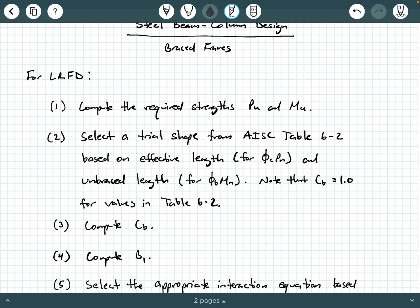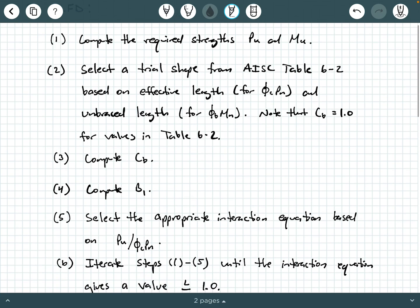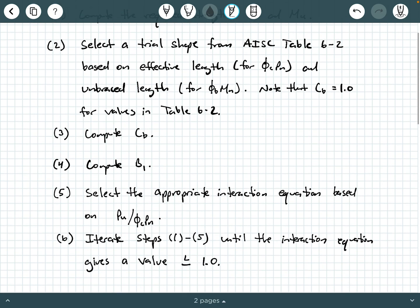Next thing you're going to do is step five. You're going to select the appropriate interaction equation based on the ratio PU over phi C PN. Again, we've done that before when we've checked beam columns. So select that appropriate interaction equation, and then we're going to evaluate that interaction equation to see if our selected trial shape is adequate. And if it's not, we're going to go to step six.